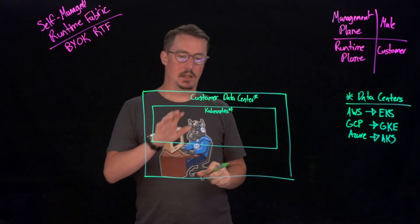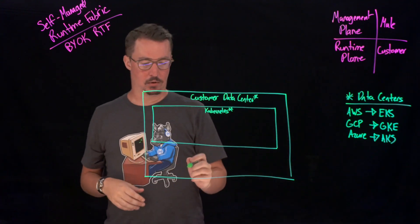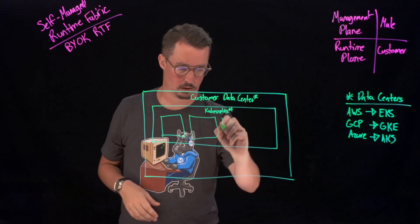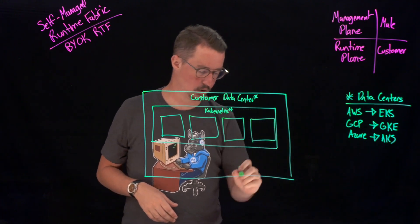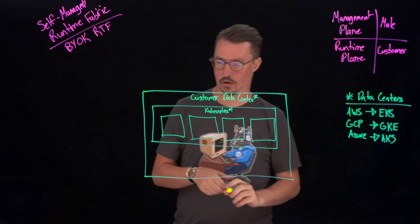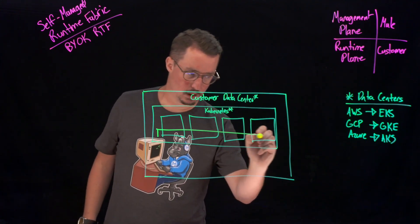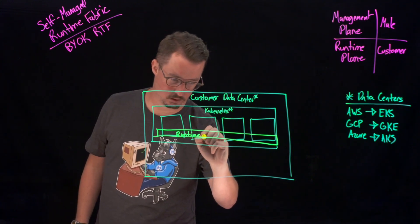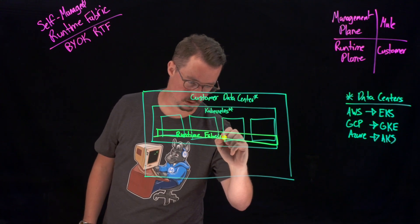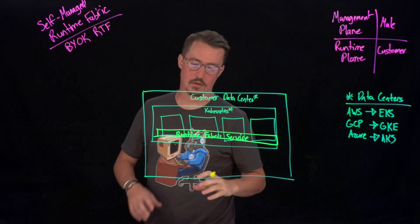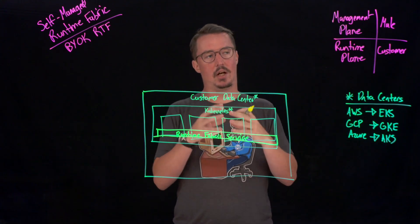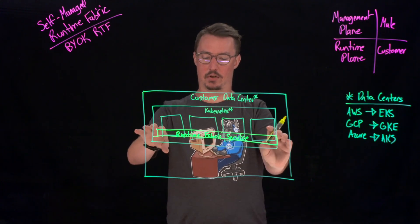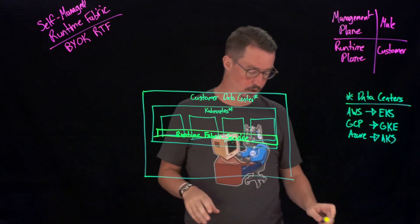Within the Kubernetes cluster, essentially what we're going to be doing is deploying a series of nodes. Across all of these nodes are going to be our runtime fabric service. This is really what's going to be tying all of them together and allowing us to manage these individual applications that are deployed here. So we've got a runtime fabric service across all of our nodes in our Kubernetes cluster.